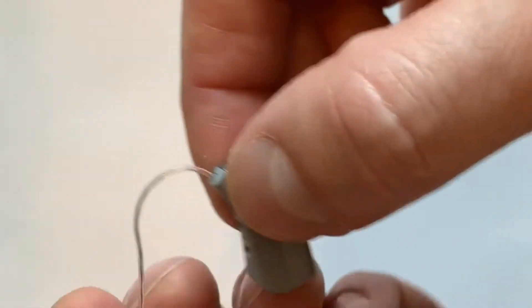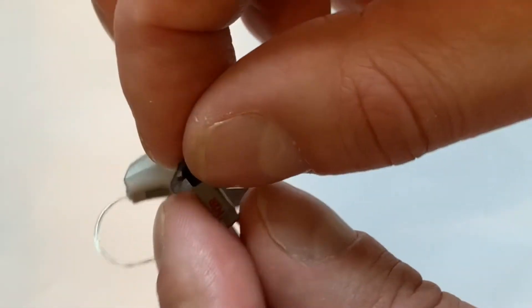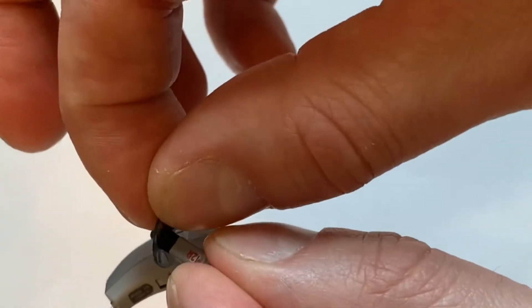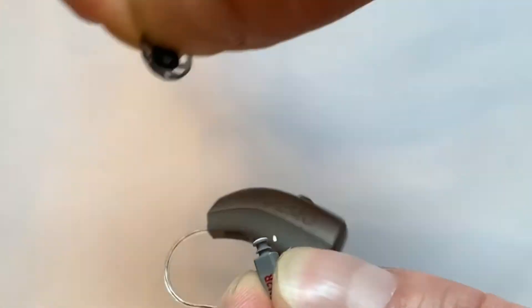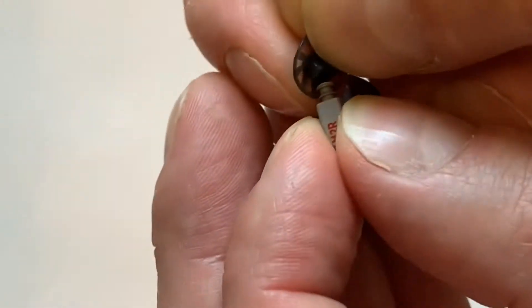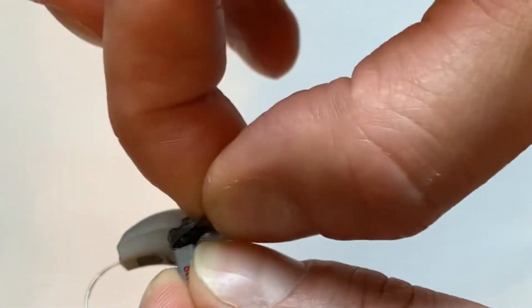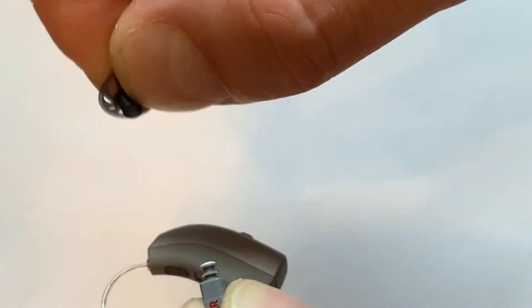So sitting on the end, the piece that goes into the ear is the dome. We're going to remove that simply by grabbing a hold of the flange and pulling straight off. It's important that you don't grab it and try to pull laterally sideways. You want to take it right off the end.